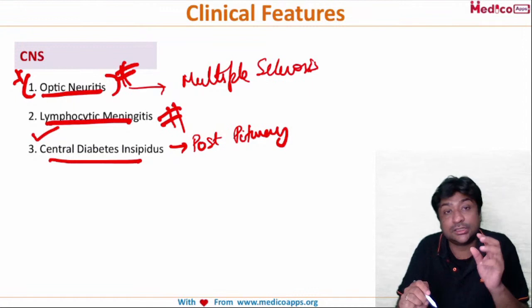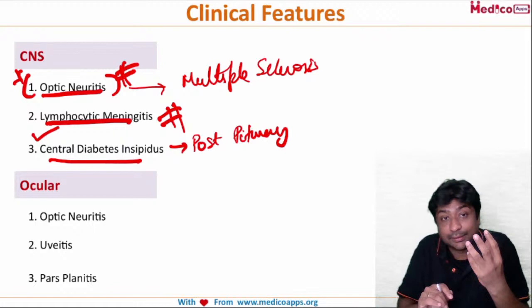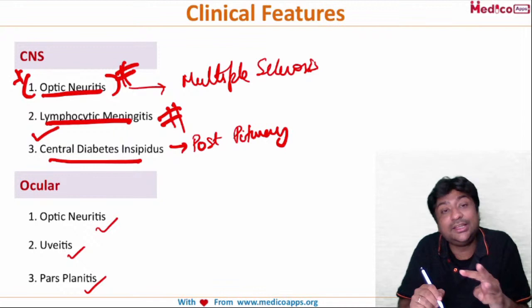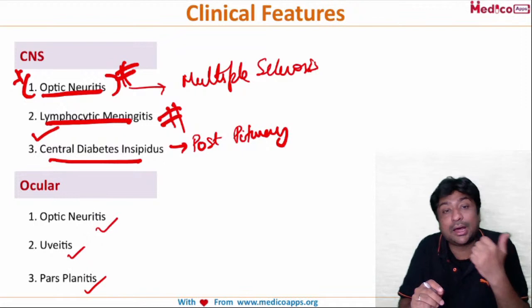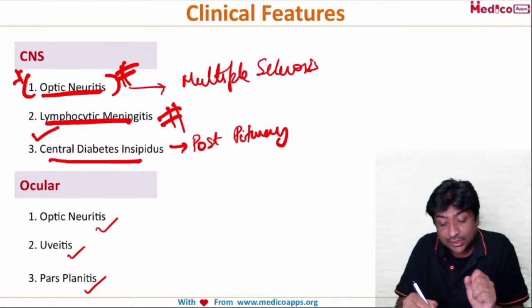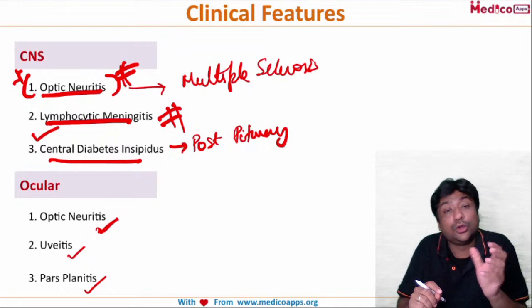Ocular features of sarcoidosis include optic neuritis, uveitis, and panuveitis. Uveitis is very important — sarcoidosis is a significant cause of uveitis and is frequently asked in examinations.